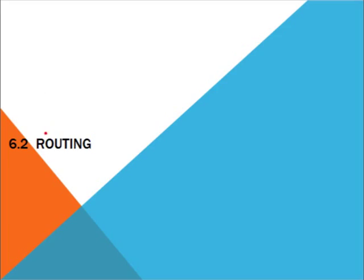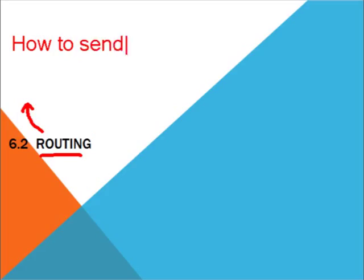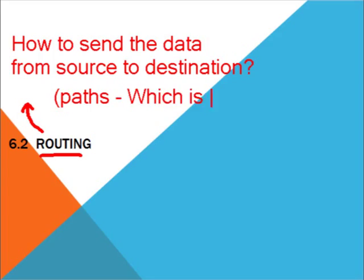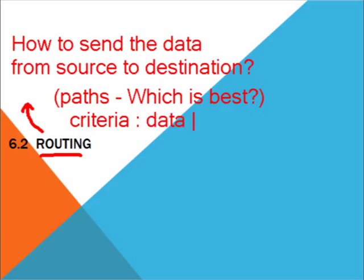The next topic we are going to cover is routing. Routing is the technical name in networking for how we send data from the source to the destination. It means that you have many different paths to reach the destination, but which path is the best? The best path is determined by different criteria, such as the data speed of the path, reliability of the path, and so on. This is a generic overview of routing.